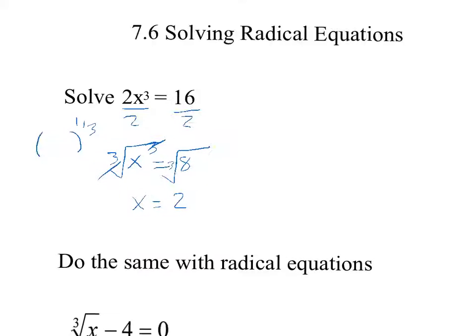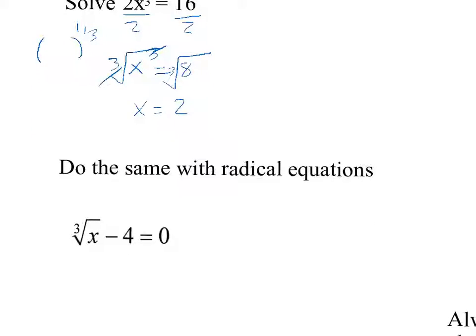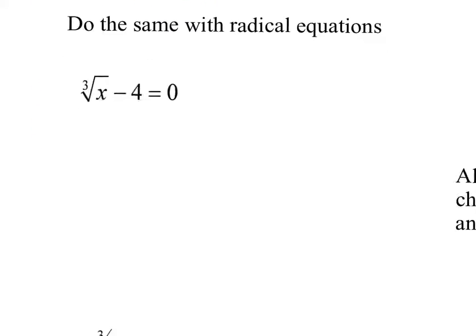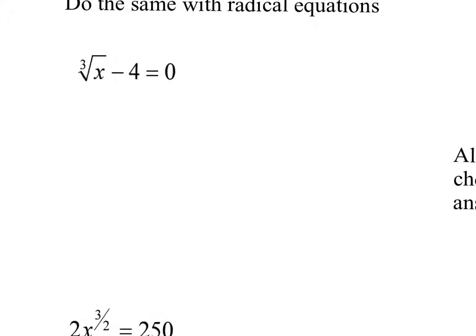We're going to do the same thing with radical equations — 'radical' is just the term for the root symbol. We get the radical by itself first by adding 4 to the other side, so now it's the cubed root of x equals 4. Then to get rid of the cubed root, I cube both sides. The cubed root and the cubed cancel, so x equals 4 to the third power, which is 64.